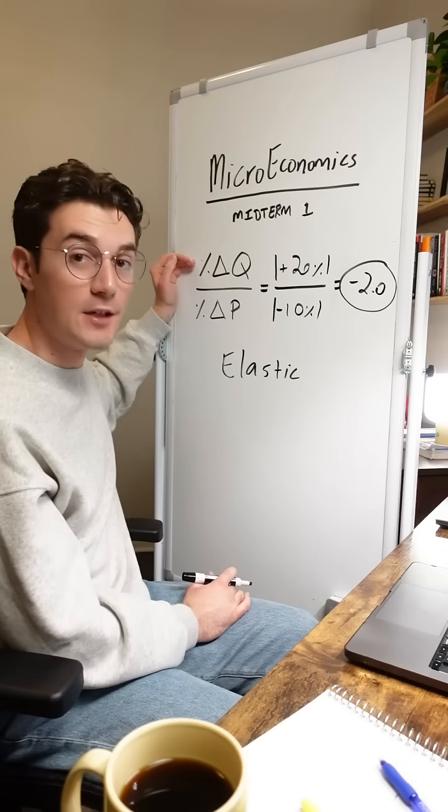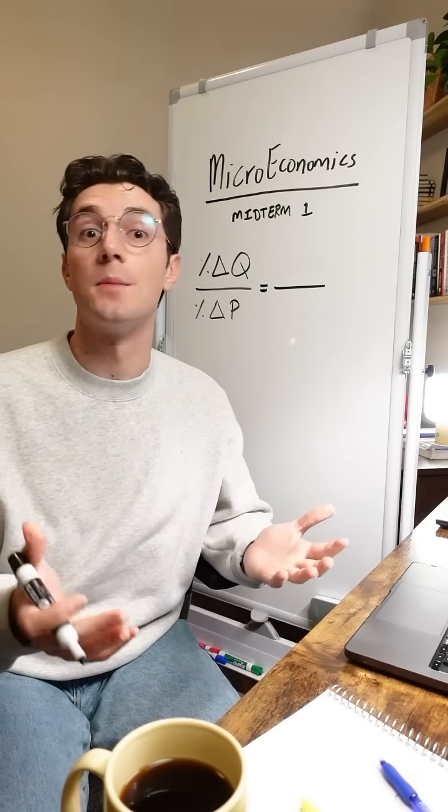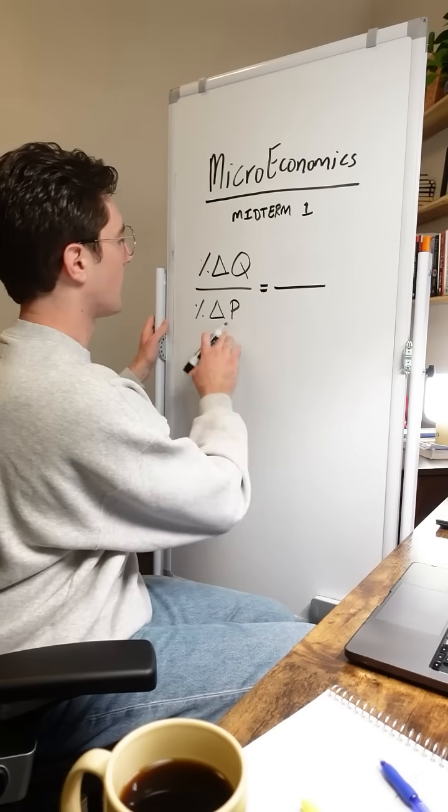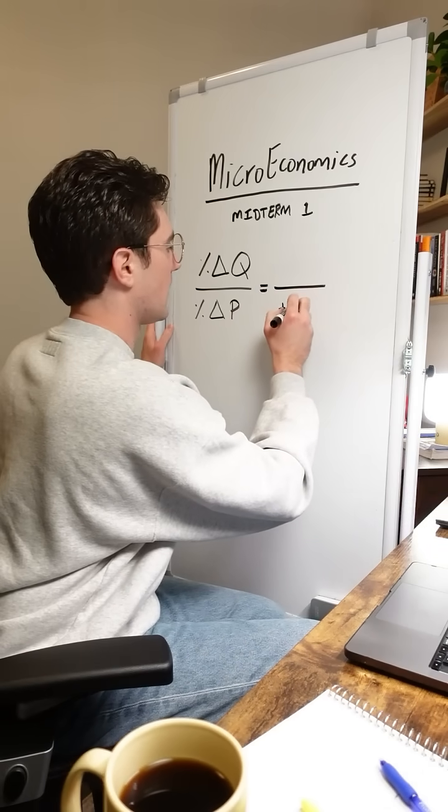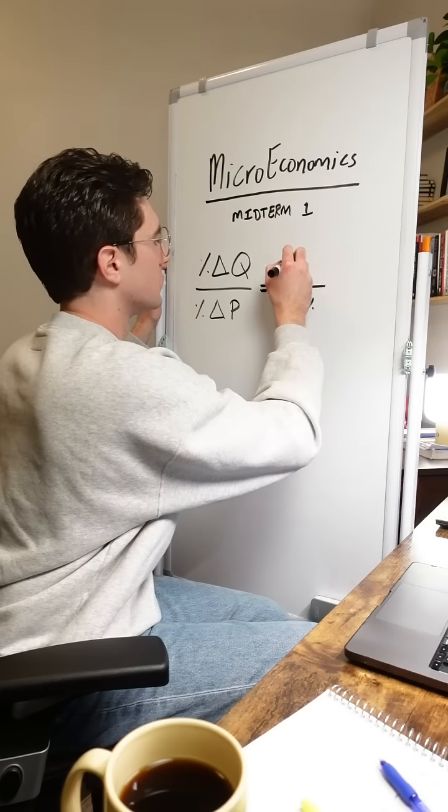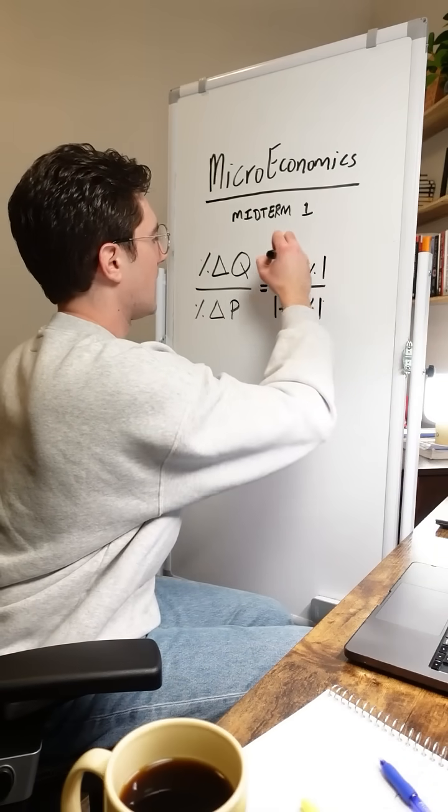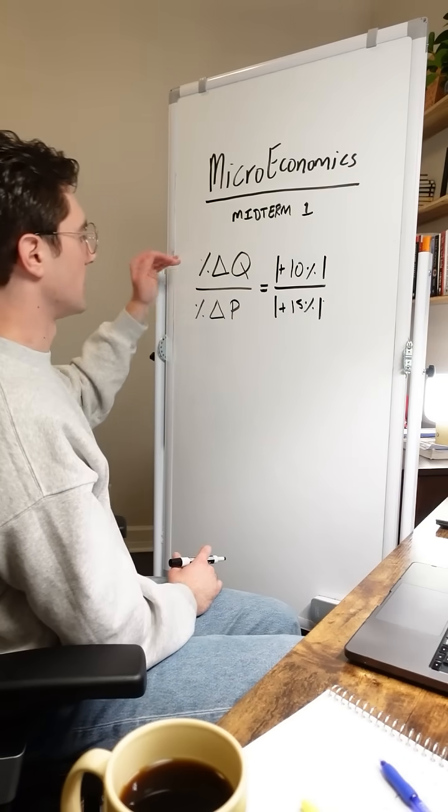All right, now let's do an example with inelastic supply. Let's say that when price increases by 15%, then quantity supplied will increase by 10%. Remember, we don't even really need to worry about the signs. We're just really focused on that absolute change in quantity and price.